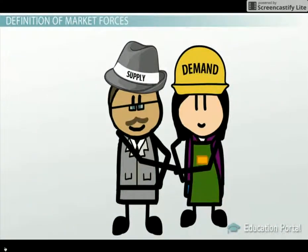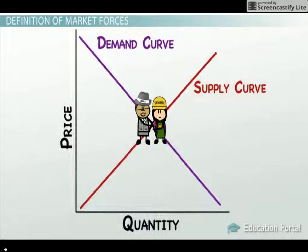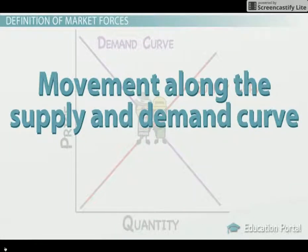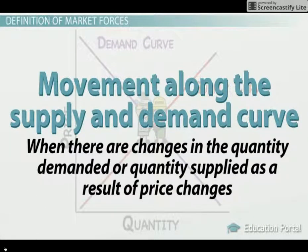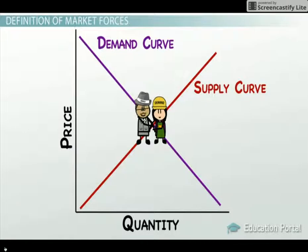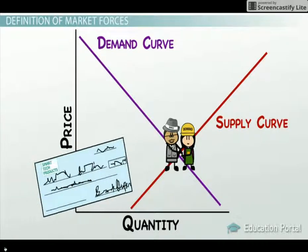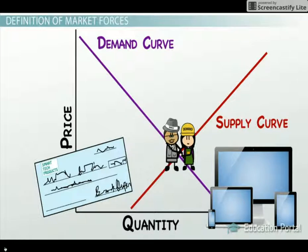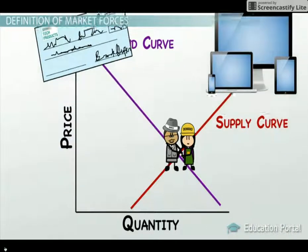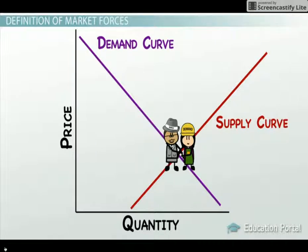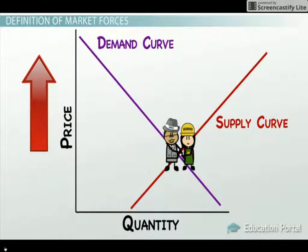It is the spot where the supply and demand curve intersect. The rest of this lesson will focus primarily on the demand and supply forces that cause a movement along the supply and demand curve, which is when there are changes in the quantity demanded or quantity supplied as a result of price changes. Additional lessons will focus on factors that cause entire shifts of those curves, such as changes in income, advancements in technology, and changes in tastes and preferences. For this lesson, we focus on the forces of demand, supply, and price changes along the existing curves.